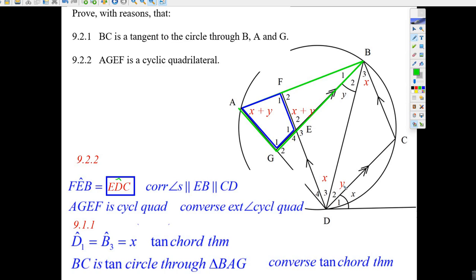Okay, so there you go, corresponding angles. And now because that angle is the same as that angle up there, that's then AGEF is a cyclic quad because of those exterior angles being equal, the converse of the exterior angle of a cyclic quad. And there we go, we have it.